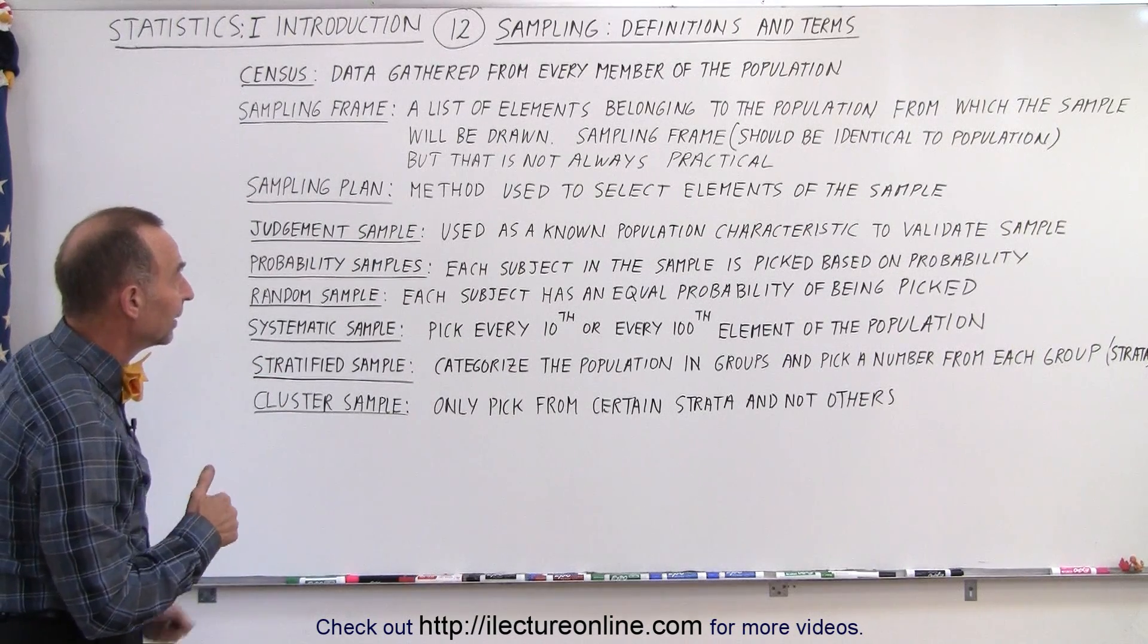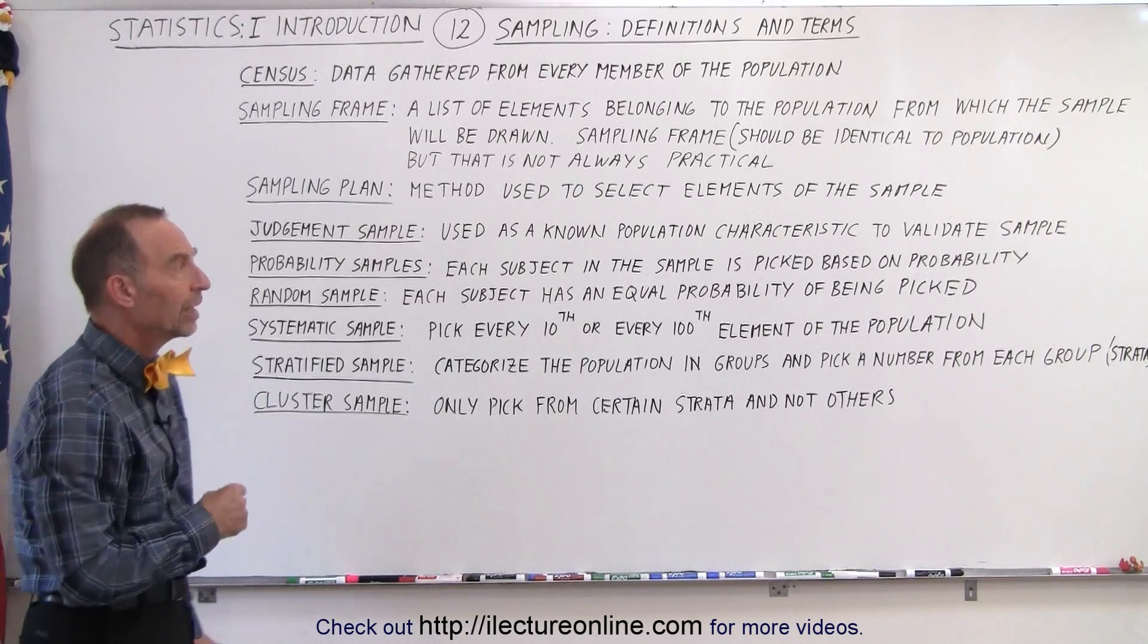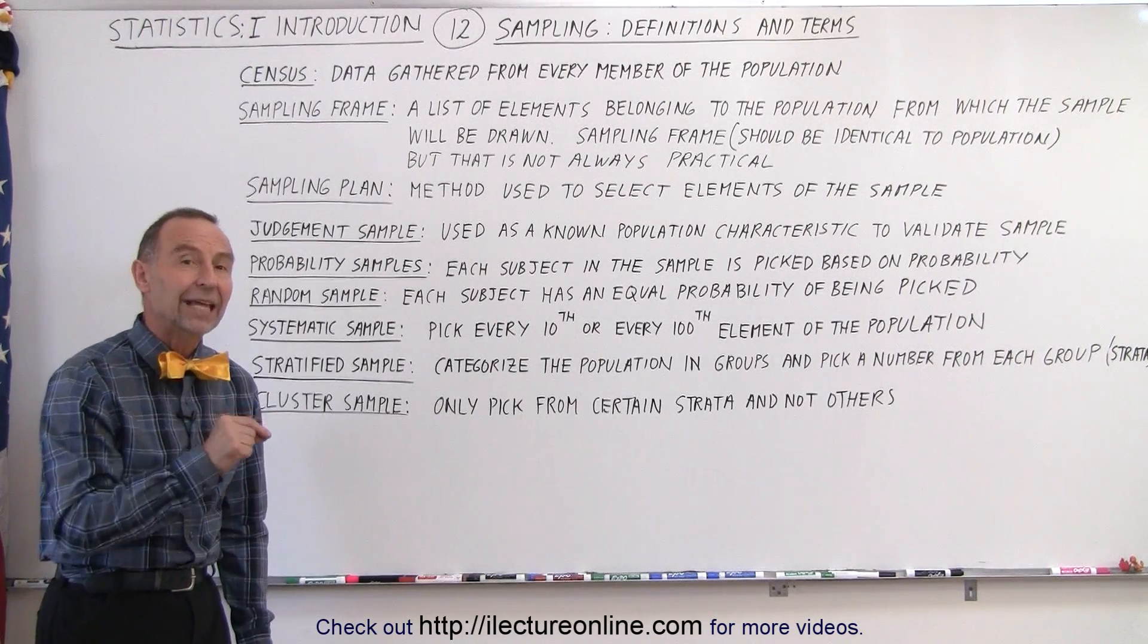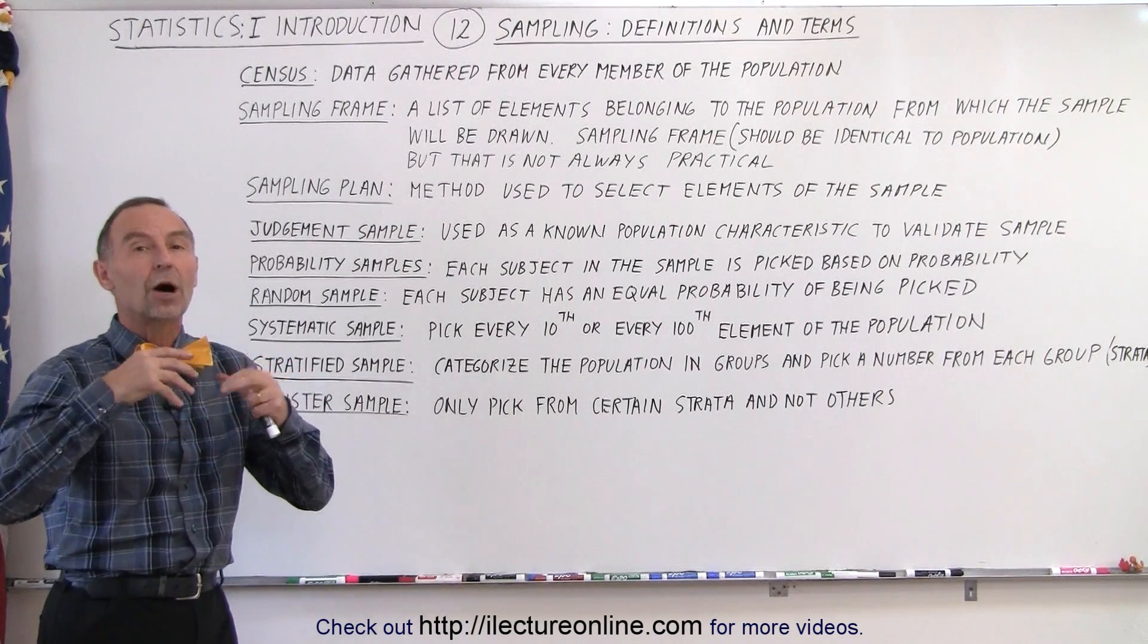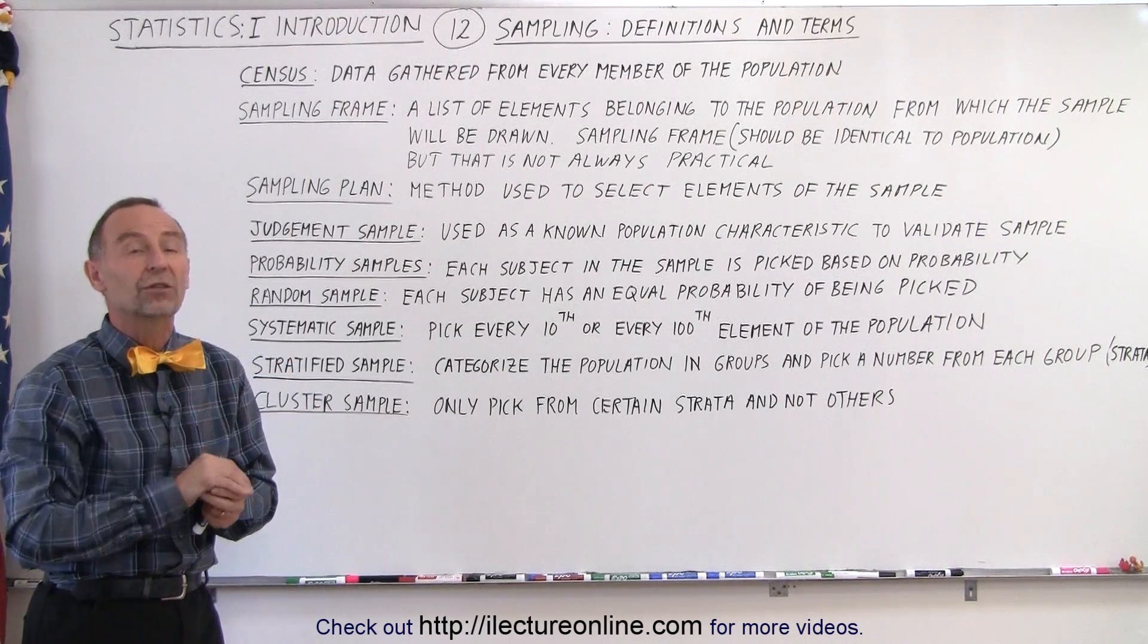The judgment sample. That is used as a known population characteristic to validate your actual sample. So what you do is, you pick a characteristic that you already are familiar with, that you know what it is.